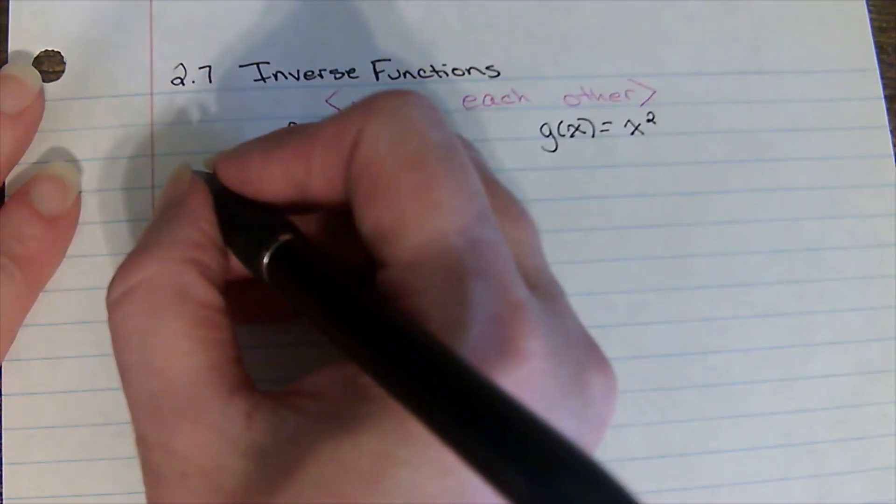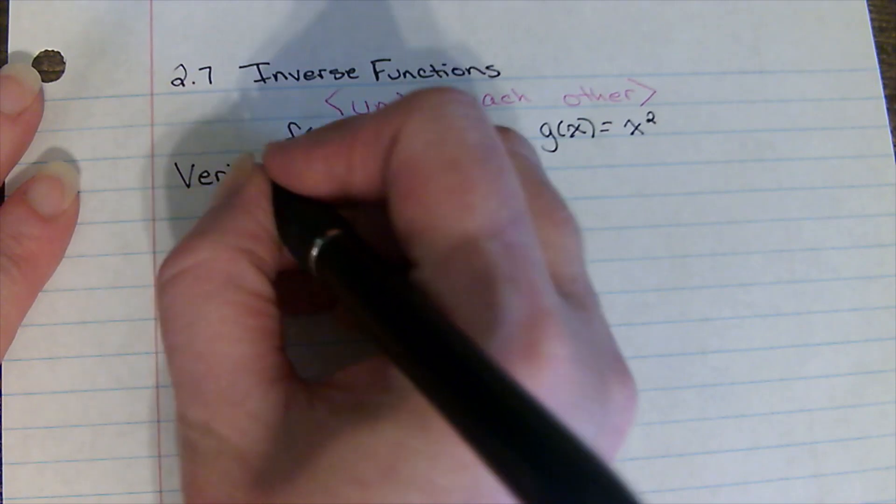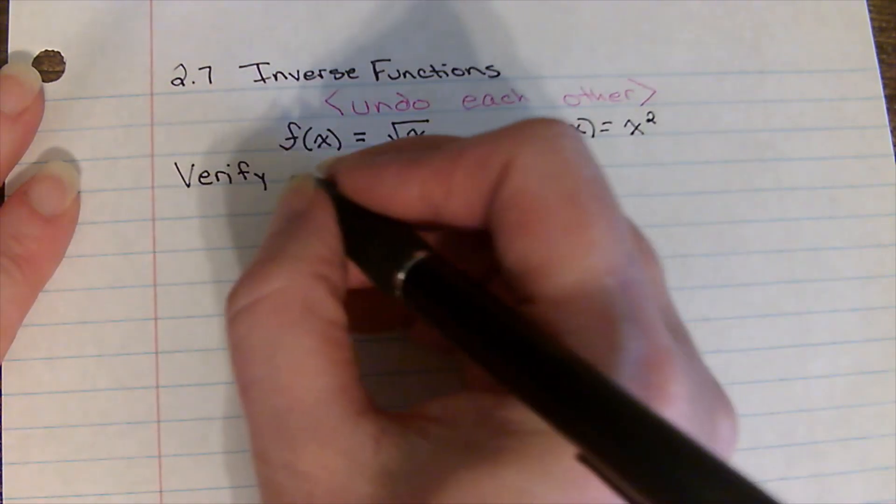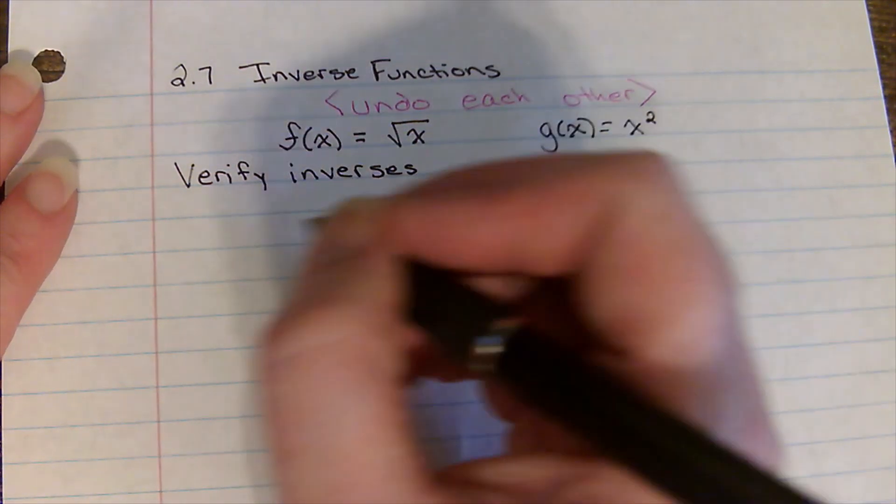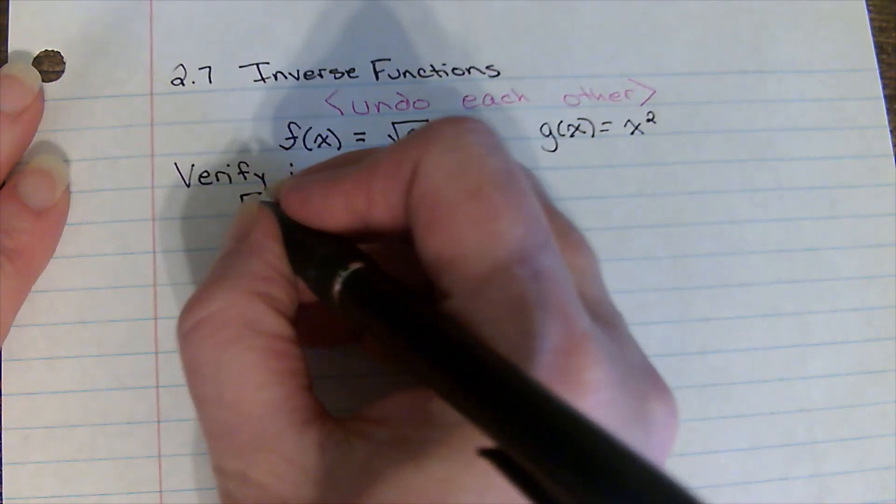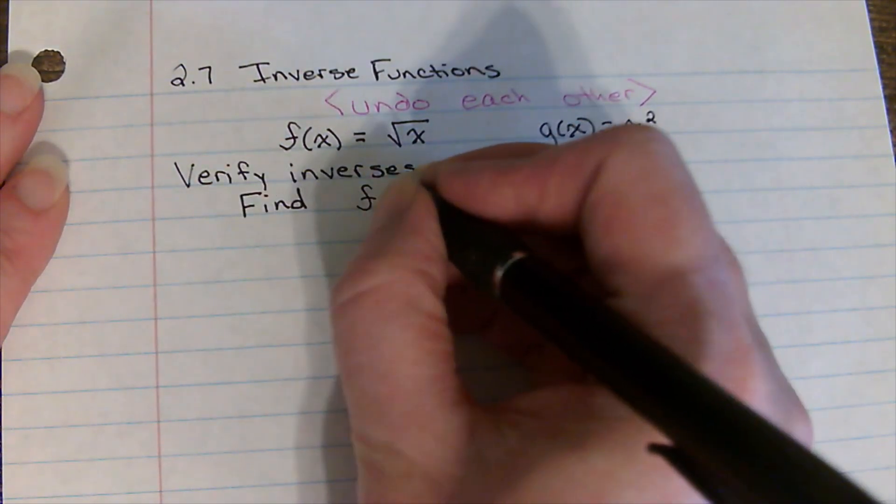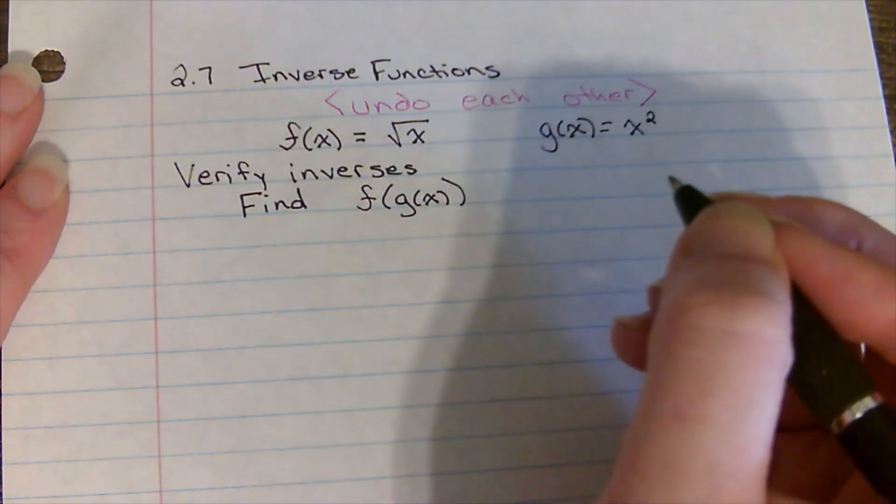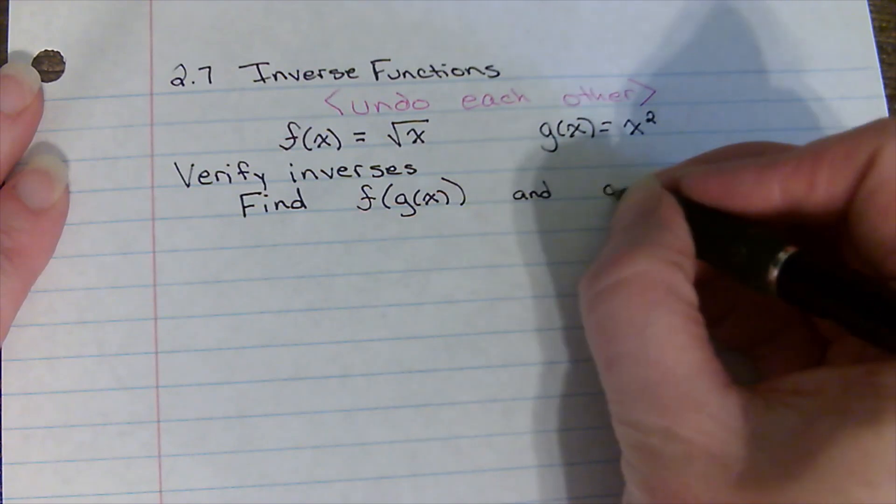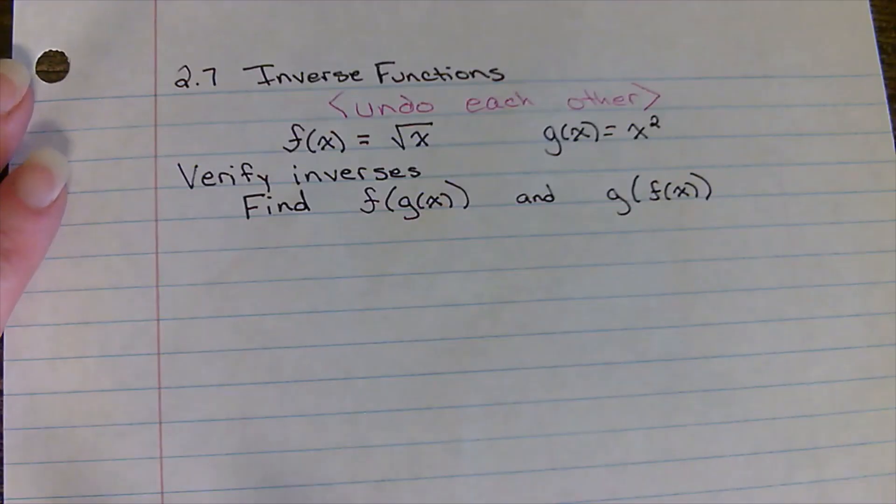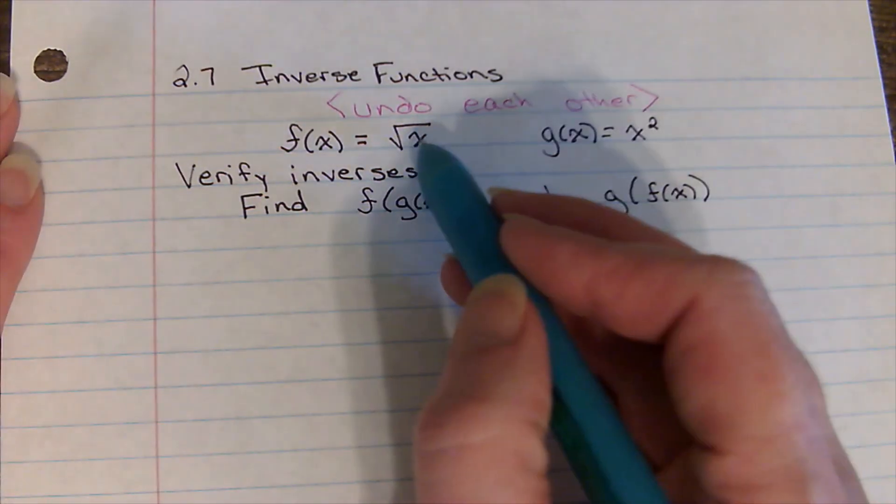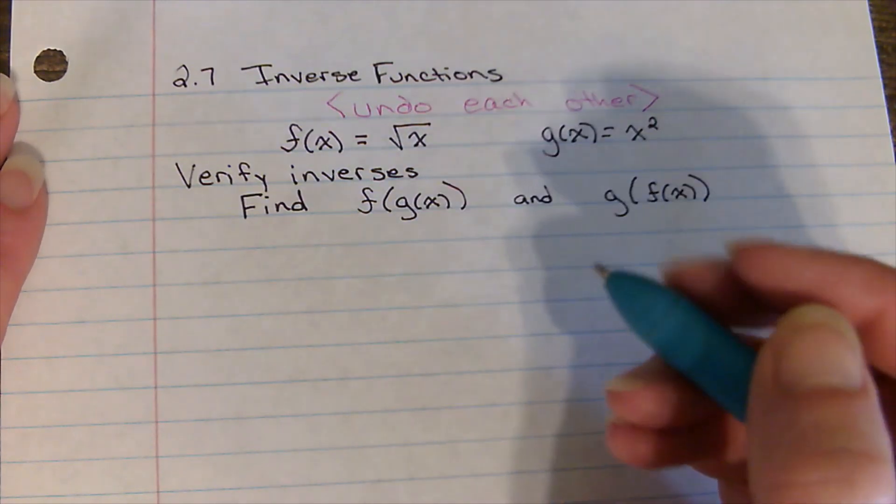Now there is a way to verify inverses. So to verify two functions are inverses, that means they're going to undo each other. So the way we do that is we find f of g of x. When I do a composite function of those, f of g of x.